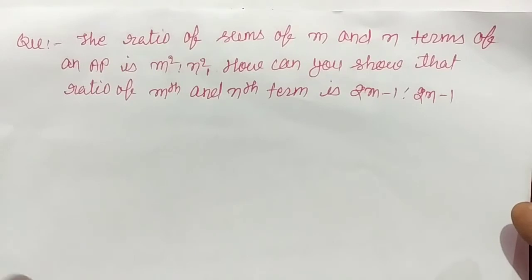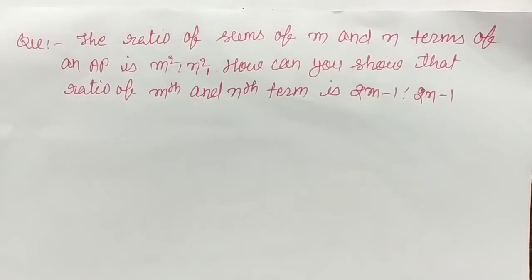Now look, this is a very important question of Arithmetic Progression. The ratio of sums of m and n terms of an AP is m² : n². How can you show that the ratio of the mth and nth term is (2m - 1) : (2n - 1)? Let us solve this question.